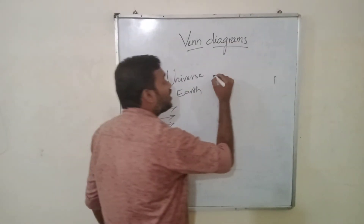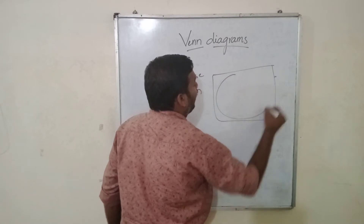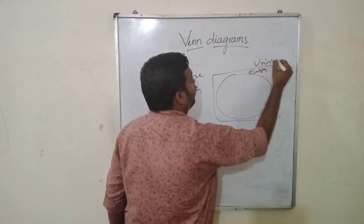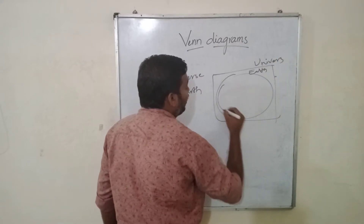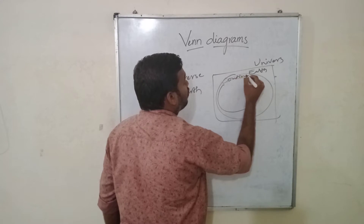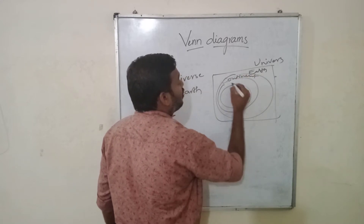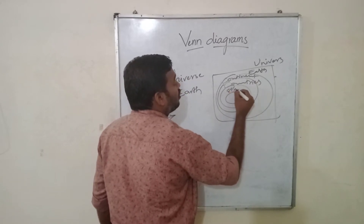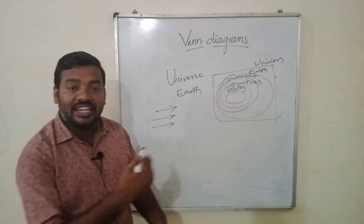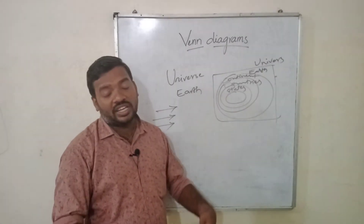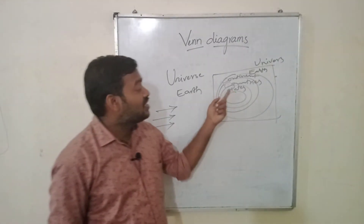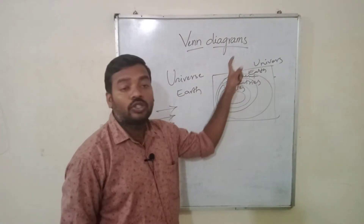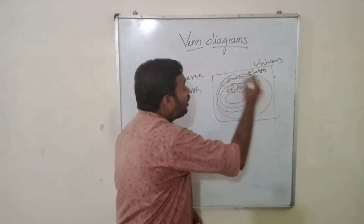Universe — in the universe we have Earth. In Earth we have continents; in continents we have countries; in countries we have states; in states we have further divisions such as villages or districts. So: states, districts, villages, towns — everything comes under the universe, and you keep representing them going inside one another.